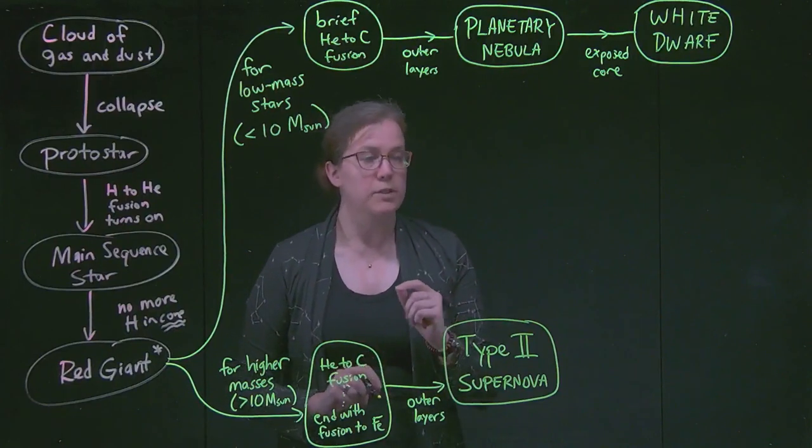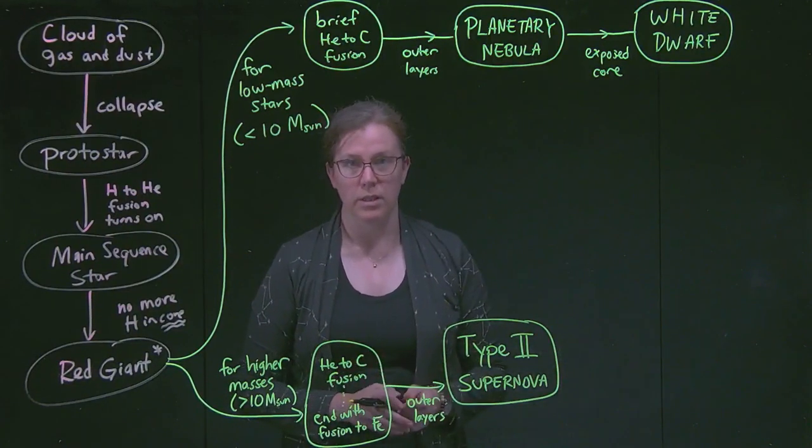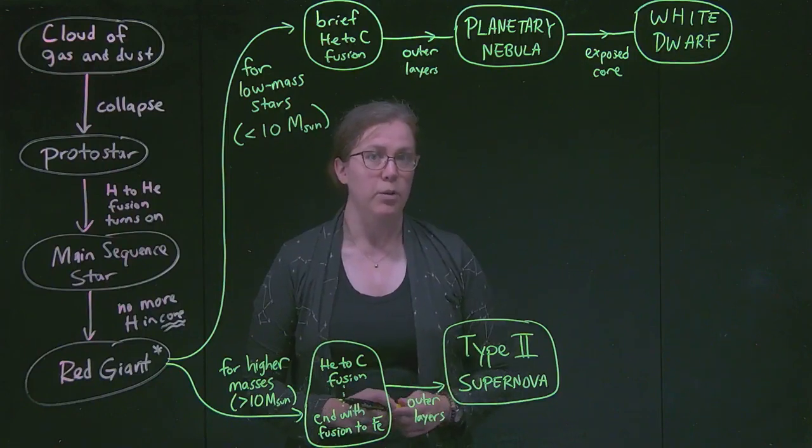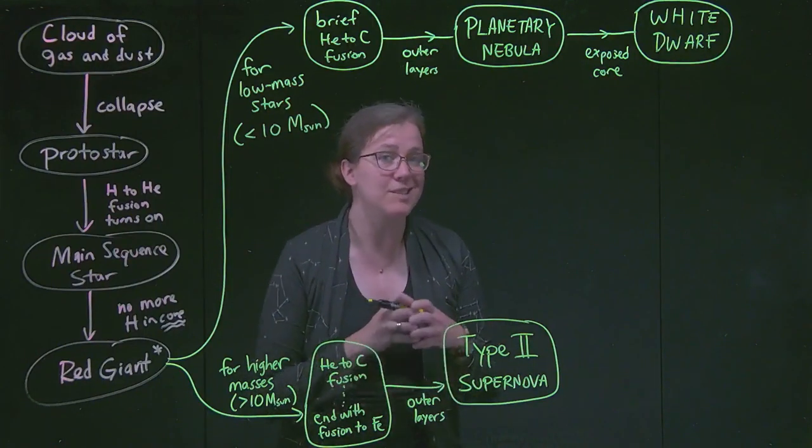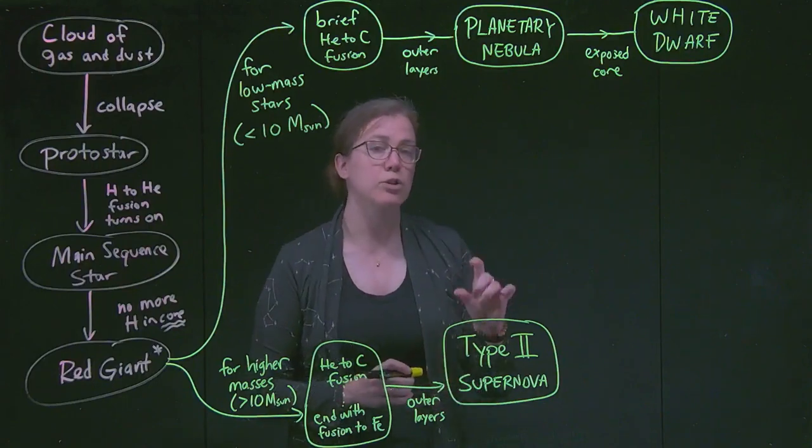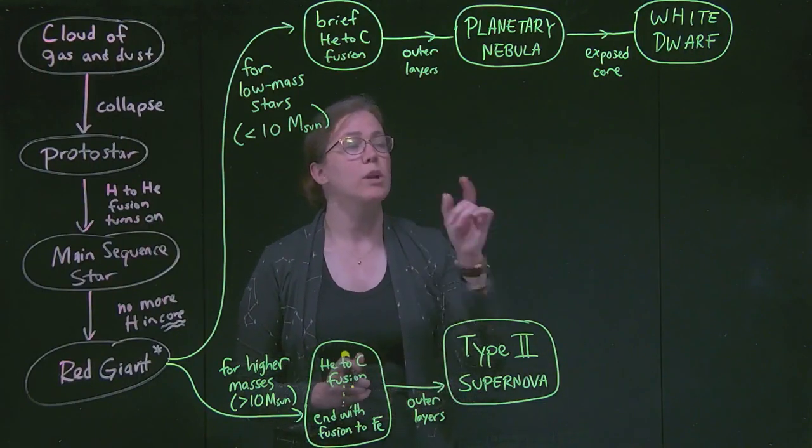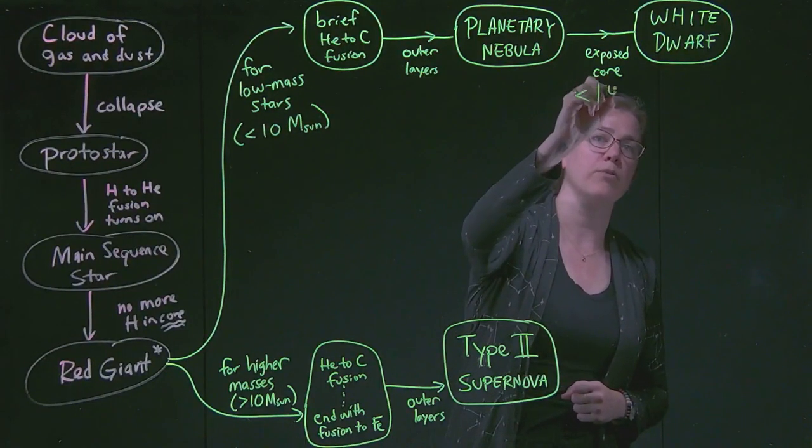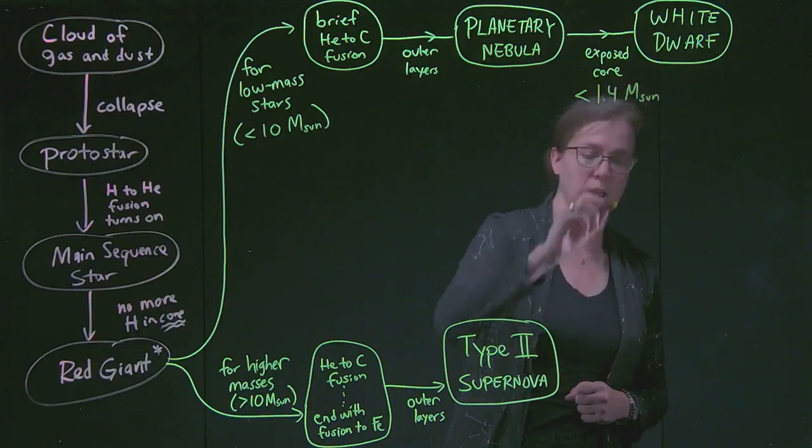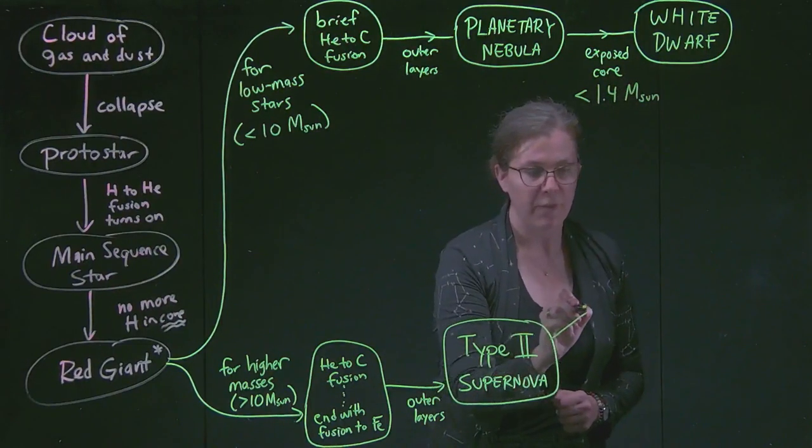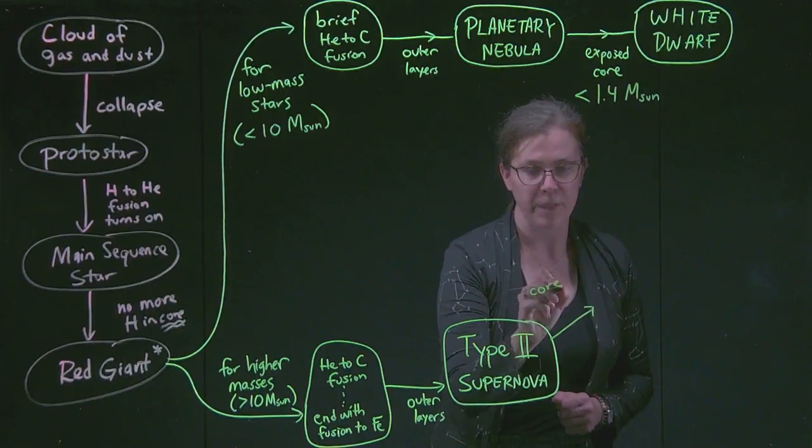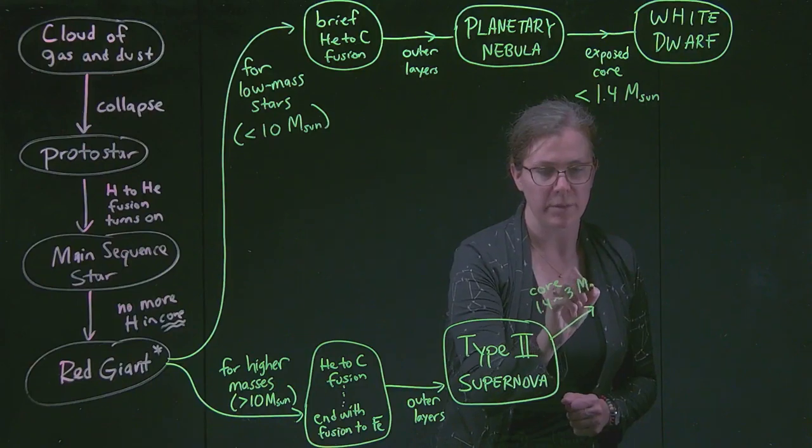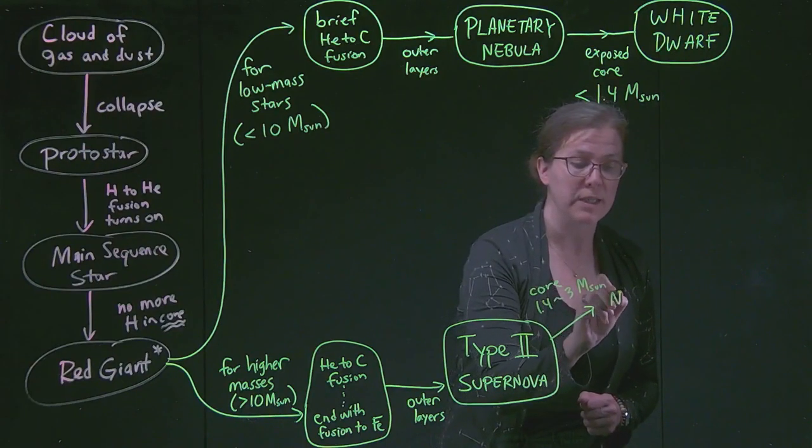Now here's the important thing, and this is something that we explored also in the lecture discussion. High mass stars are all going to make this type 2 supernova when they make iron. But, based on how much mass is still left in their core, there are two different things that could happen. And so I want us to recognize that up here, the exposed core is going to be less than 1.4 solar masses. So for this type 2 supernova, if we have a core that is 1.4 to about 3 solar masses, then we will leave behind a neutron star.